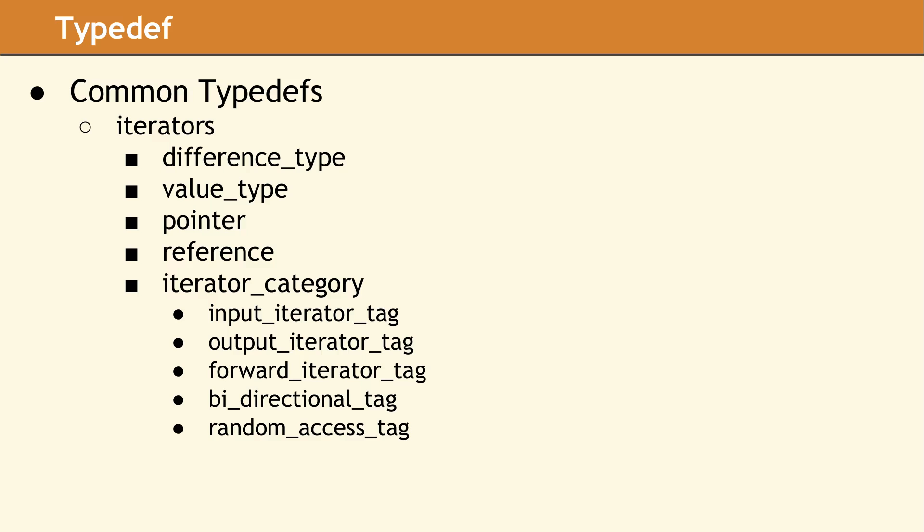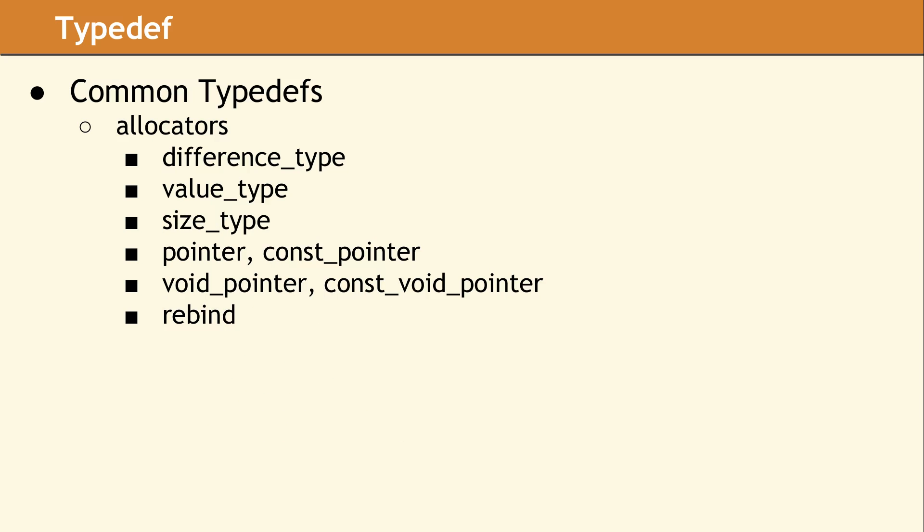This is a list of the aliases defined by iterator classes in the standard library. For every iterator class, there is an iterator category alias, which defines what operations that iterator supports. For example, the iterators for a vector support random access, while the iterators for a map are bidirectional. The input and output iterator tags are mostly used by stream iterators.